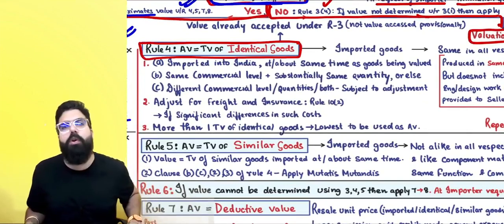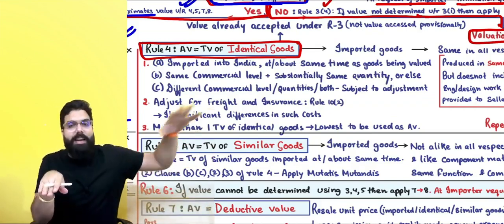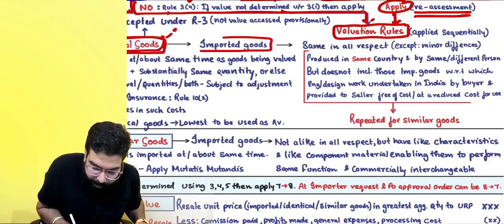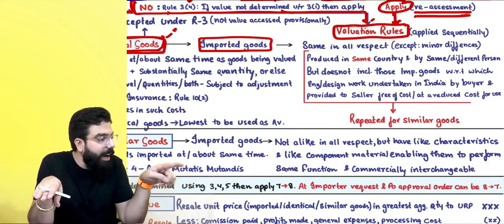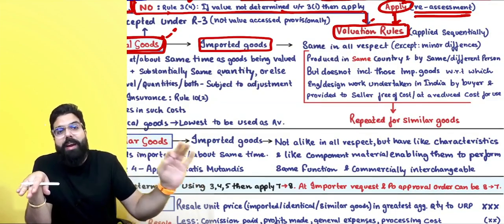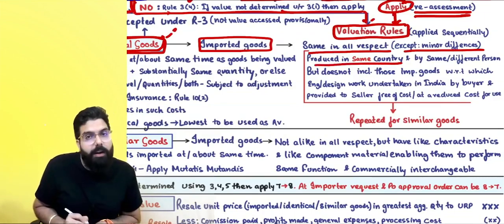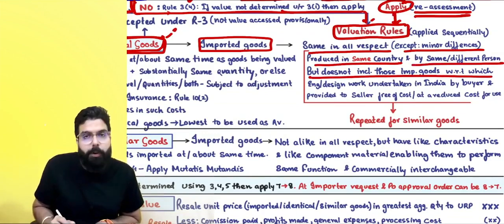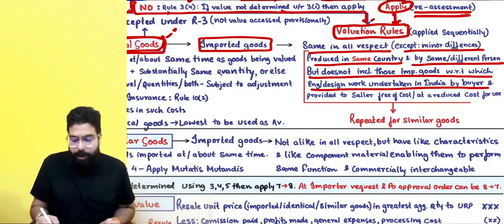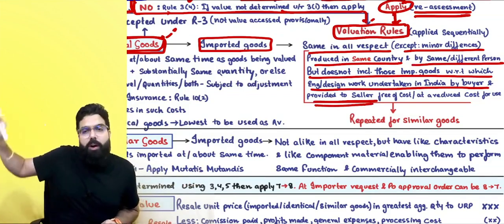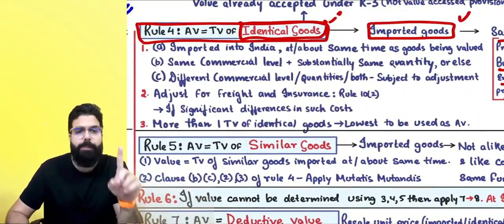The first valuation rule is Rule 4, which says take the transaction value of identical goods. Identical goods means imported goods — not domestic goods — that are the same in all respects except minor differences, produced in the same country by the same or different person. However, goods are excluded if engineering or design work was undertaken in India by the buyer and provided to the seller free of cost or at reduced cost.